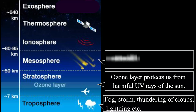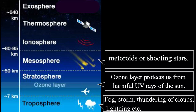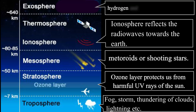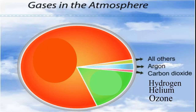The phenomena of burning of meteors, that is shooting stars, occurs in the mesosphere. The ionosphere reflects radio waves back towards the earth, and in the exosphere, gases like hydrogen and helium are found.